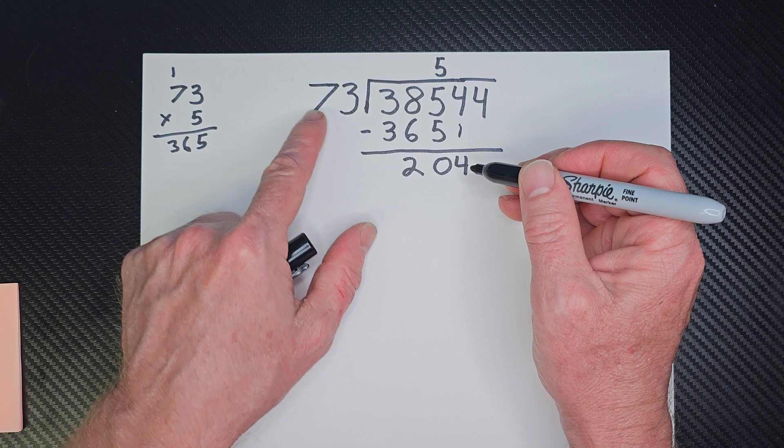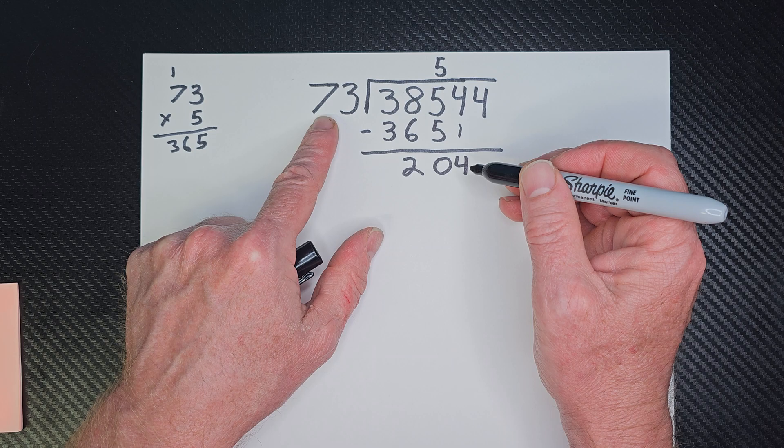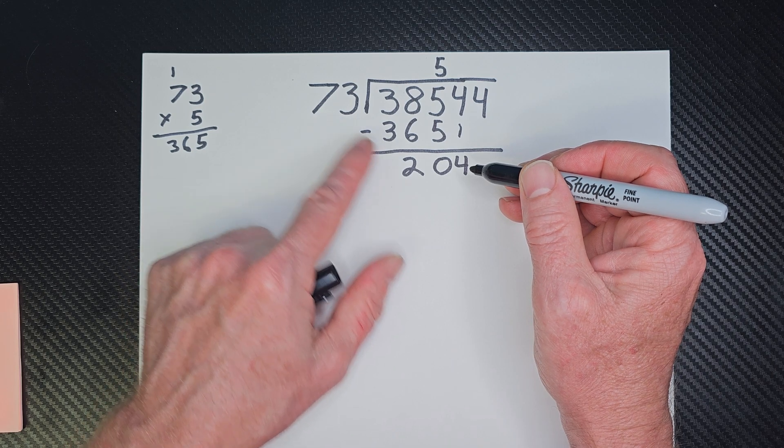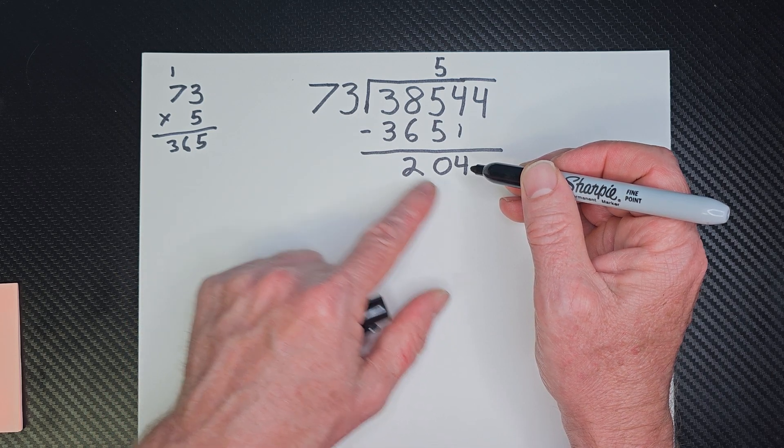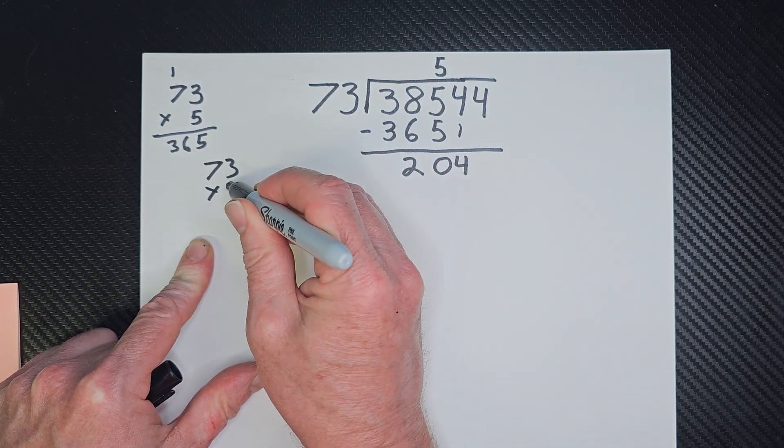How many times can I put 73 into 204? Let me see. 70 times 3 would be 210. And we'll probably have to do 73 times 2.